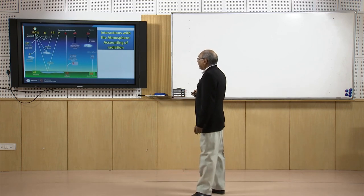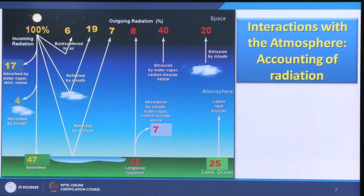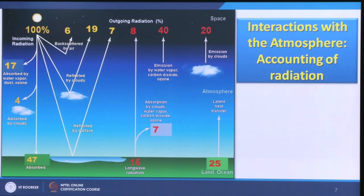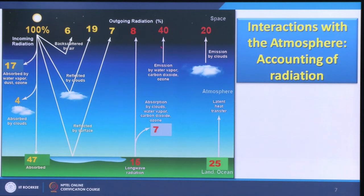If we consider total incoming solar radiation as 100%, 17% is absorbed by water vapor, dust and ozone before it even reaches the surface of the earth. Another 4% may be absorbed by clouds, and 47% is absorbed by the ground. A small 7% is reflected by the surface and may reach the satellite through the atmosphere. Clouds can again reflect about 19% of energy, and 6% may be back-scattered by air before reaching the earth's surface.